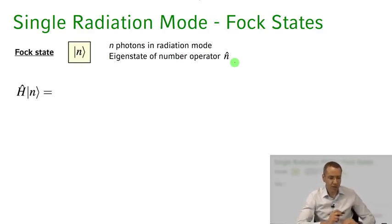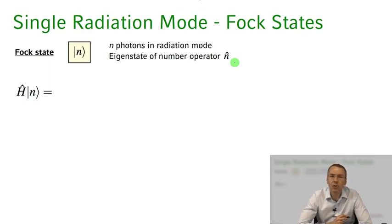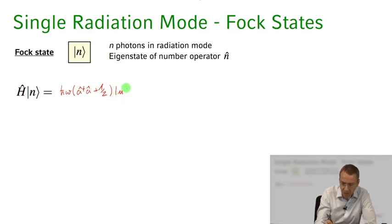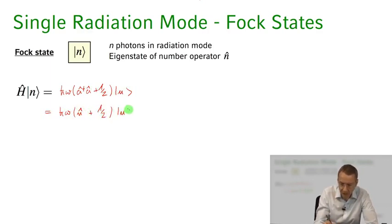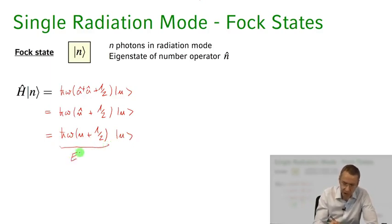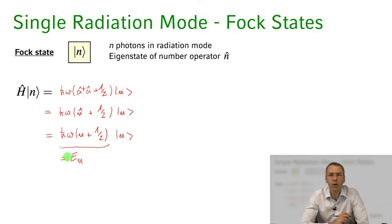Let's calculate the action of the electromagnetic field Hamiltonian on such a Fock state. The electromagnetic field Hamiltonian for a single mode radiation field is ħω(a†a + 1/2), applied to state |n⟩. That gives ħω(n̂ + 1/2)|n⟩. Since |n⟩ is an eigenstate of the number operator n̂ with eigenvalue n, we get ħω(n + 1/2)|n⟩, with eigenenergy ħω(n + 1/2).